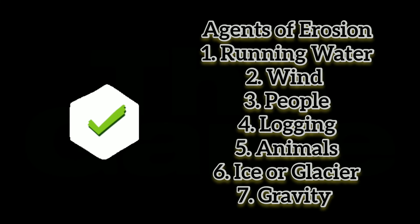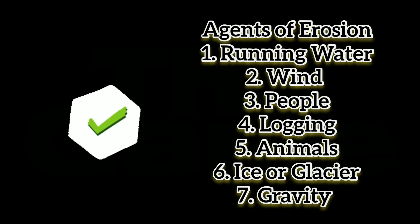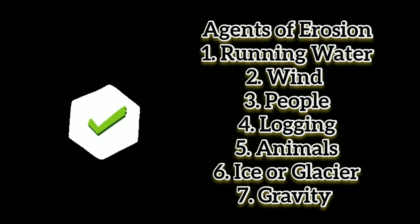The correct answers are — agents of erosion: Number 1 Running water, Number 2 Wind, Number 3 People, Number 4 Logging, Number 5 Animals, Number 6 Ice or Glacier, and Number 7 Gravity.